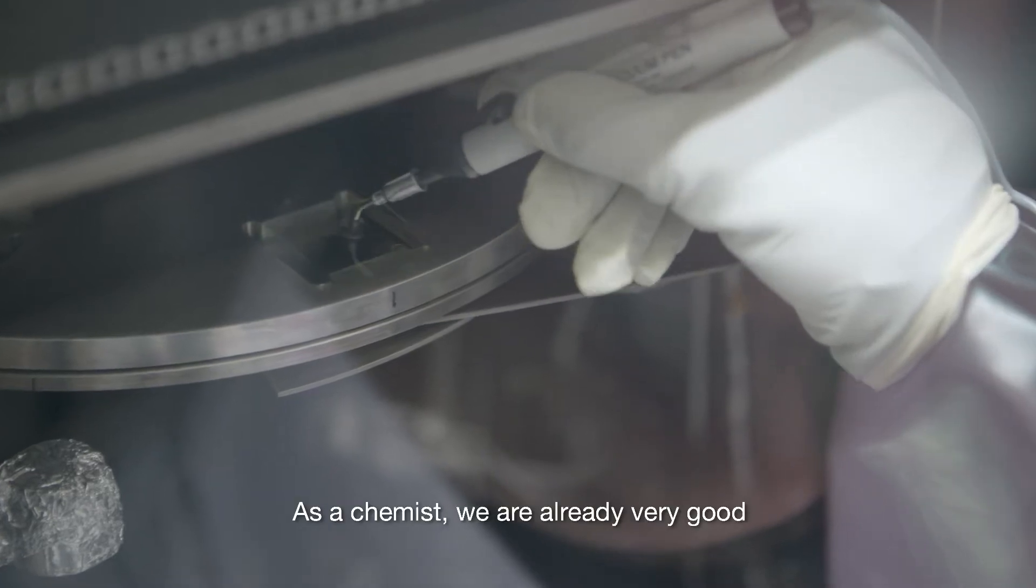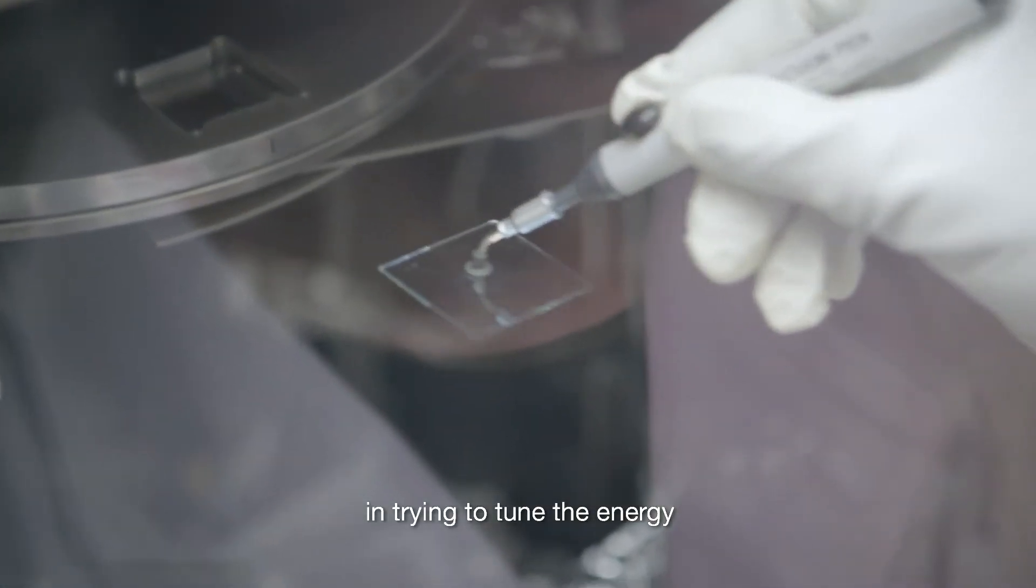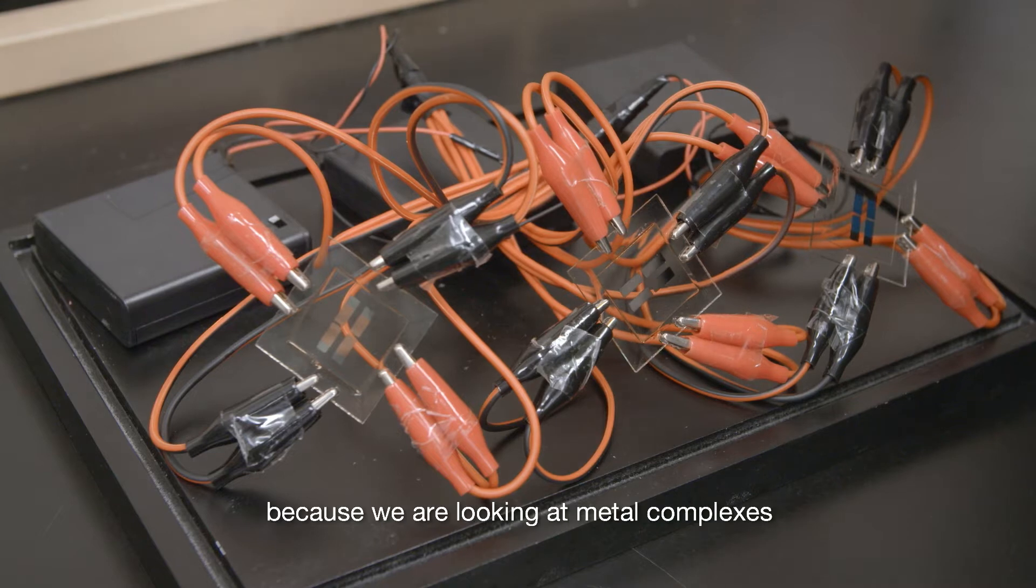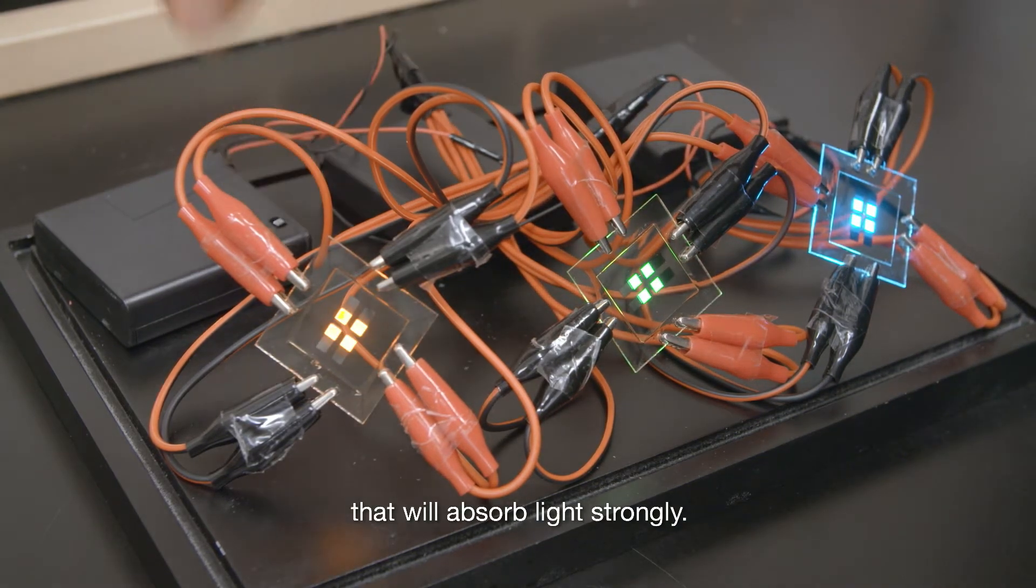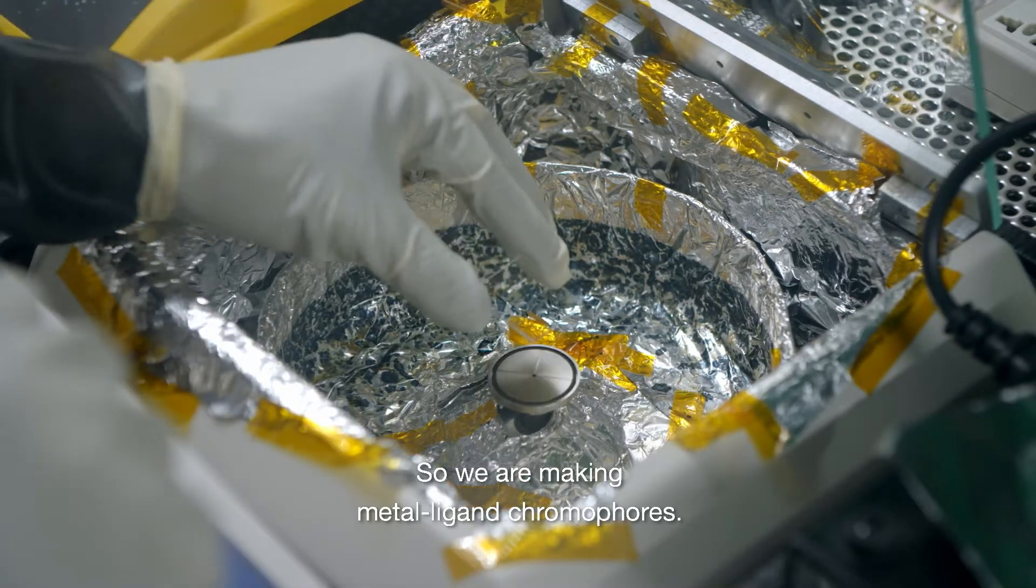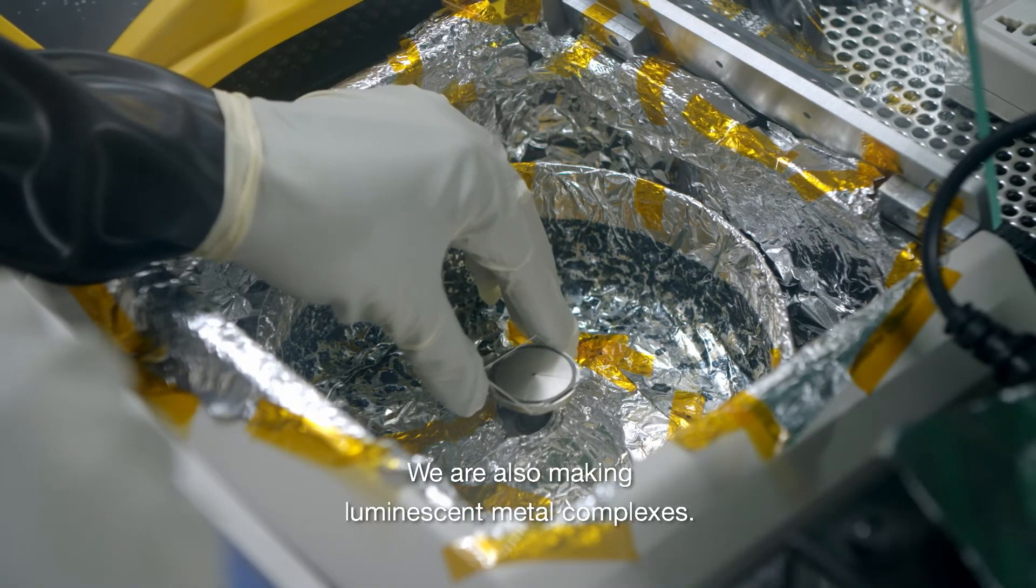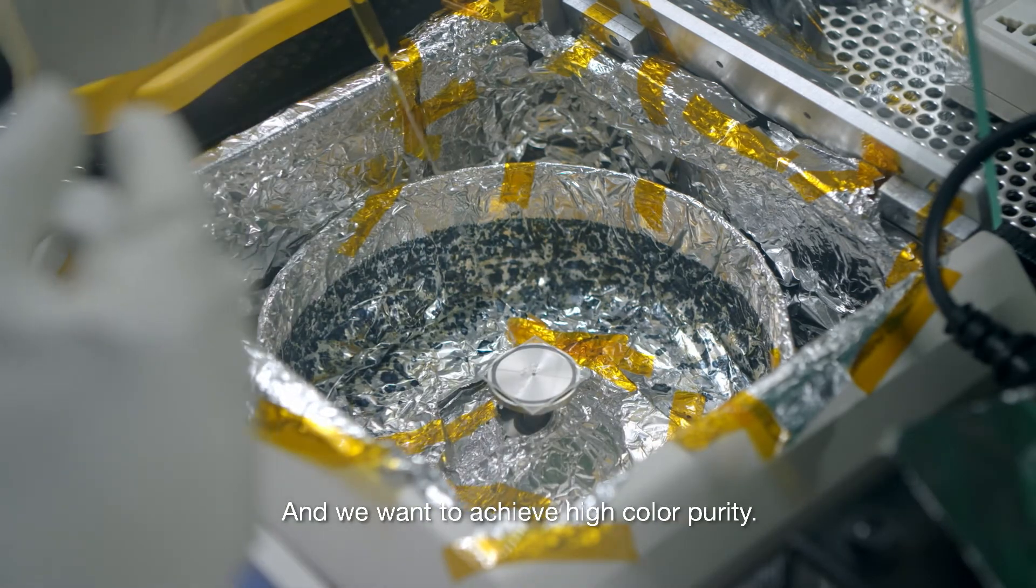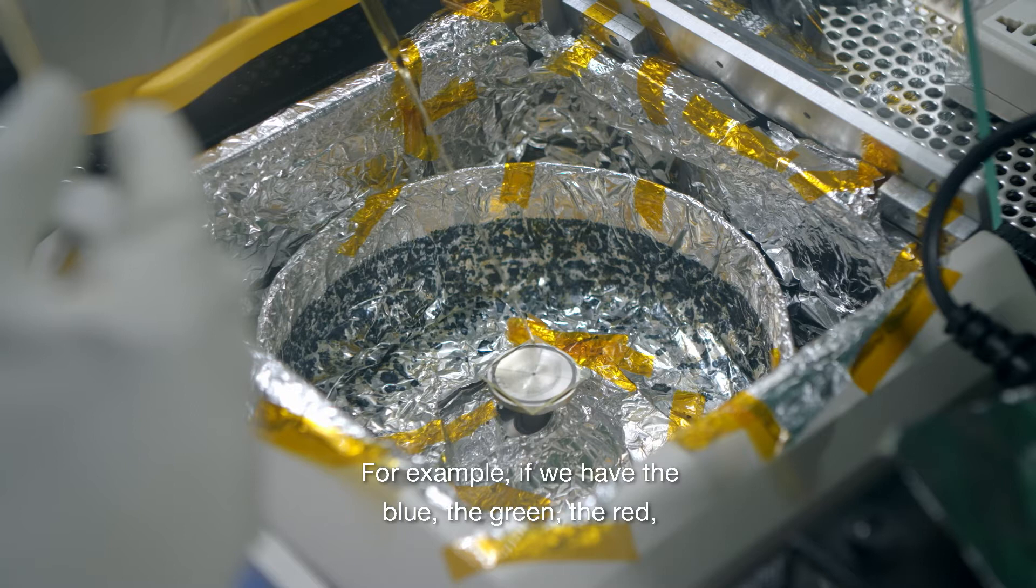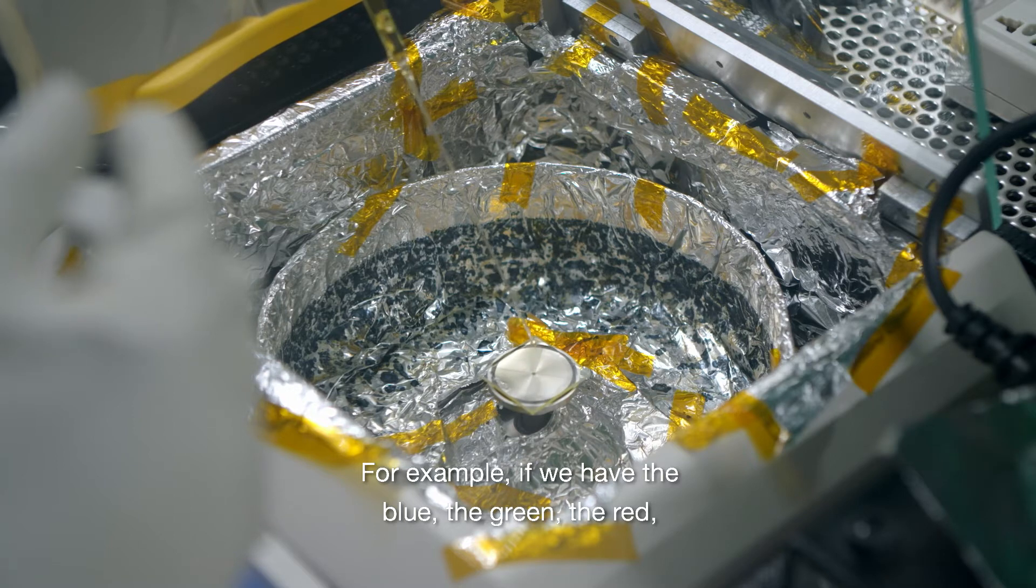As a chemist, we are already very good at trying to tune the energy because we are looking at metal complexes that will absorb light strongly, so we are making metal-ligand chromophores. We are also making luminescent metal complexes and we want to achieve high color purity. For example, if we have the blue, the green, the red, the three primary colors.